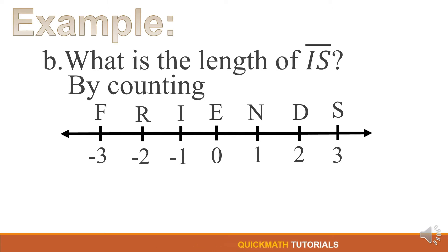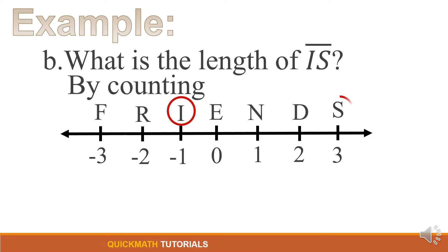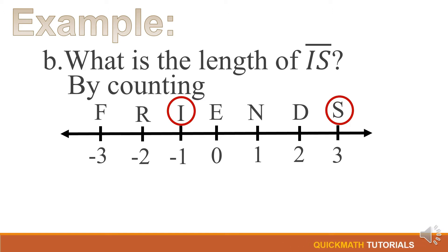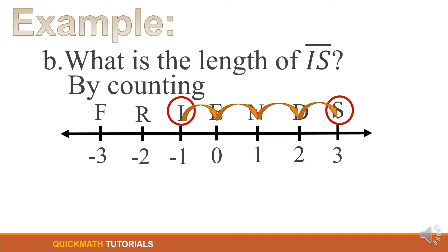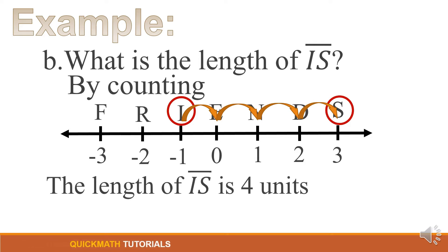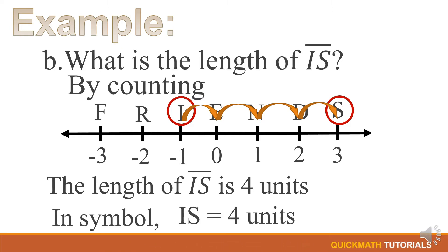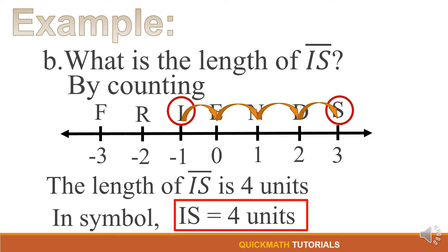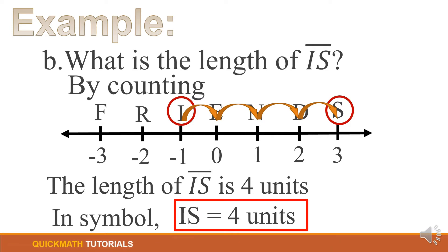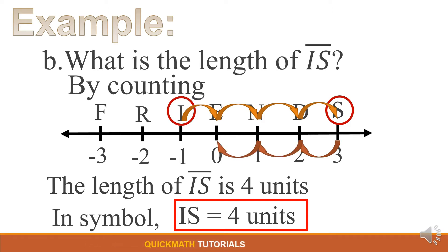Next, what is the length of line segment IS? Our point I is here and our point S is here. By the counting method, we just count the steps from I to S: 1, 2, 3, 4. Therefore, the length of line segment IS is 4 units. In symbol, IS = 4 units. You can also count starting from S to I — 1, 2, 3, 4 — so they have just the same answer.